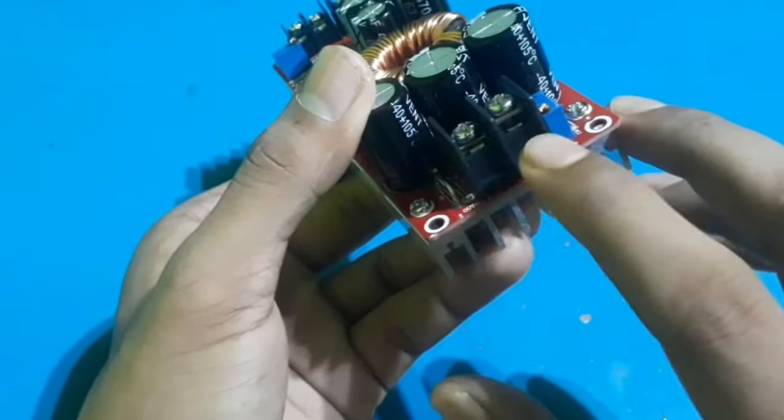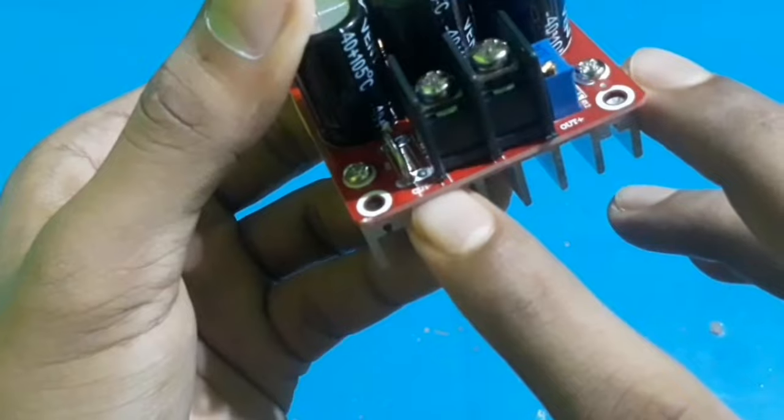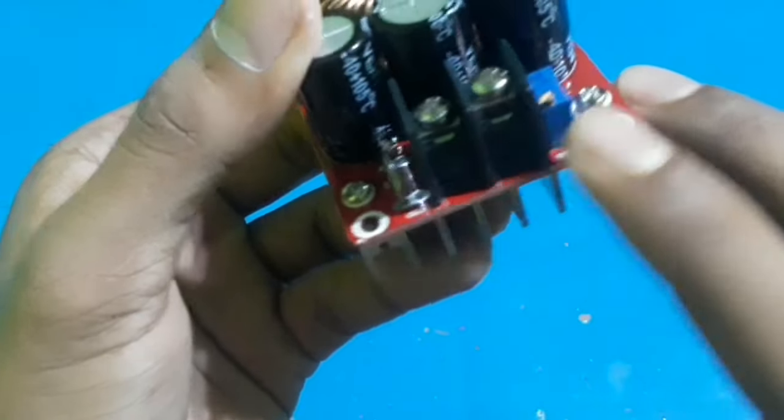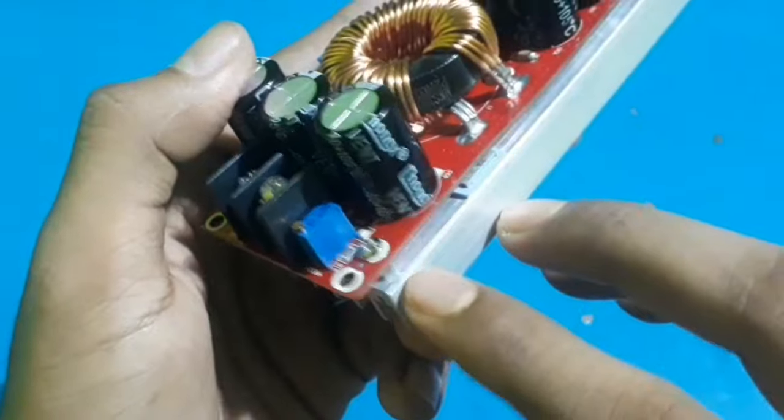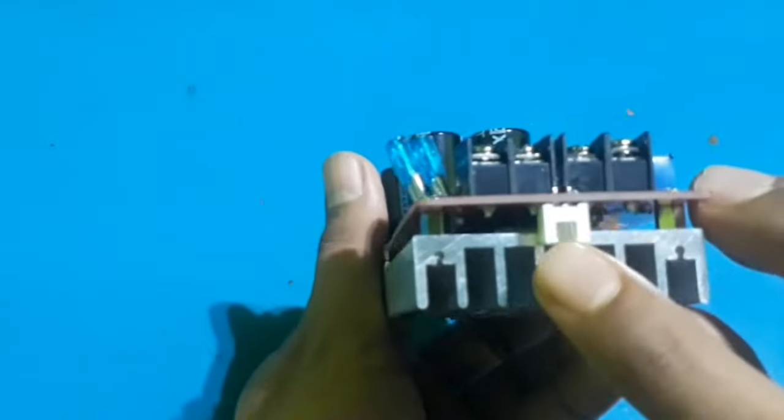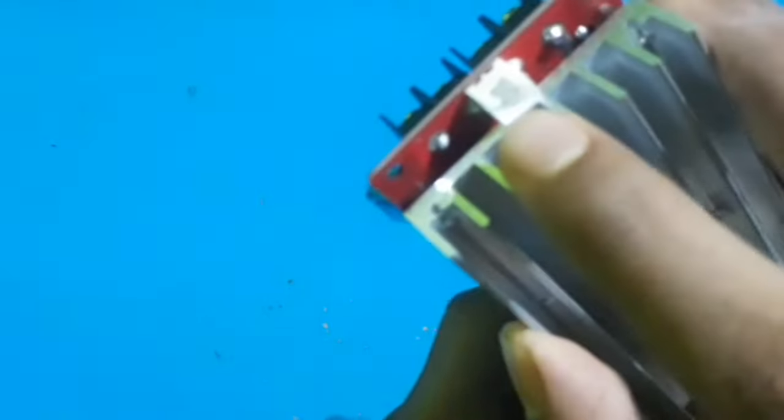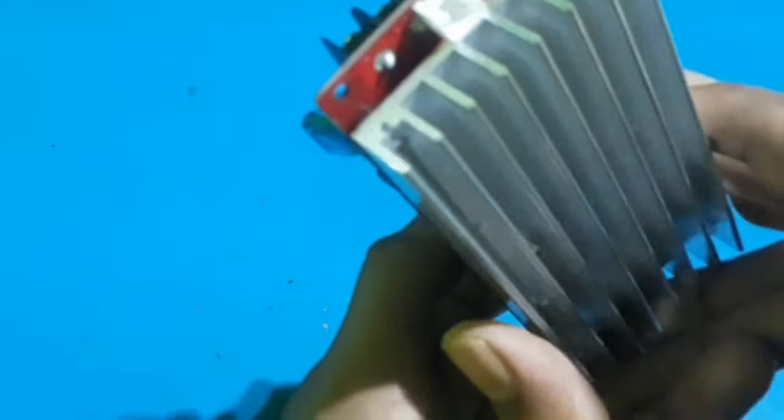Here are the output terminals: one is negative and another is positive, as mentioned on the device. Here is the potentiometer to adjust the output voltage. This is a large heatsink and here's a socket to connect a 12 volt cooling fan for the heatsink.